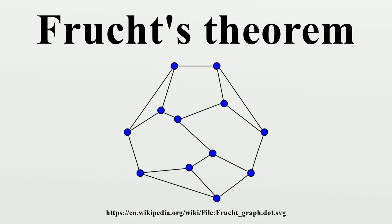Planar graphs are also not capable of realizing all groups as their symmetries. For instance, the only finite simple groups that are symmetries of planar graphs are the cyclic groups and the alternating group A5. More generally, every minor-closed graph family is incapable of representing all finite groups by the symmetries of its graphs. Laszlo Babai conjectures, more strongly, that each minor-closed family can represent only finitely many non-cyclic finite simple groups.